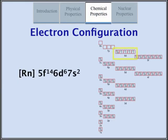Hasium, located in the middle of the transition metals, is thought to have multiple oxidation states because it has four unpaired electrons in the 6d orbitals.